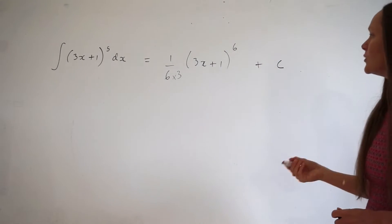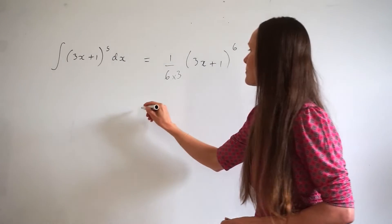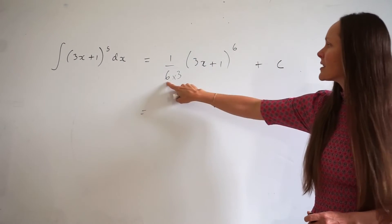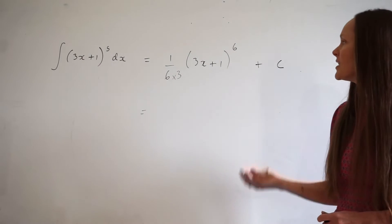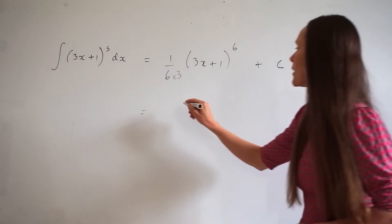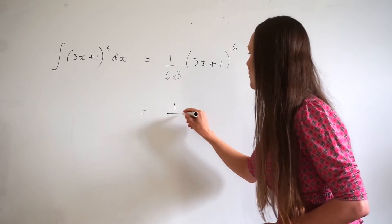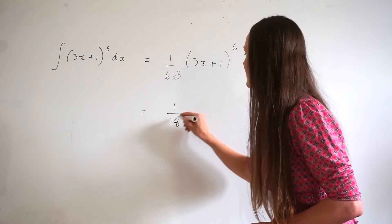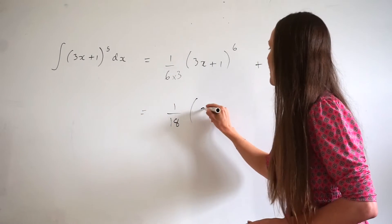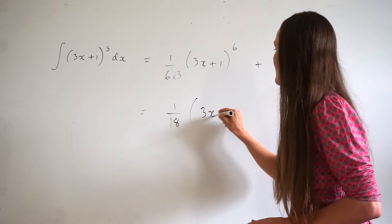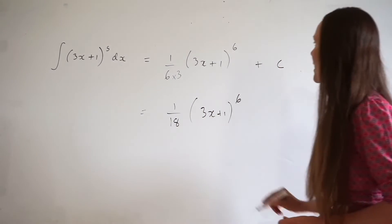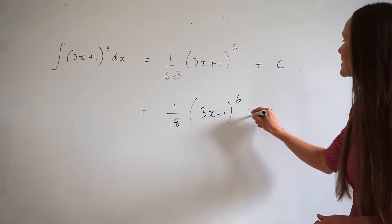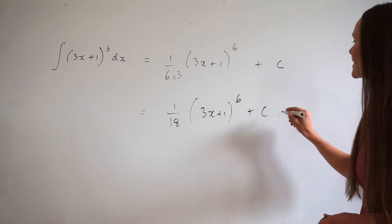Then you need to simplify. 6 multiplied by 3 is 18, so the final answer is 1 over 18 multiplied by (3x + 1) raised to the power of 6, plus c.